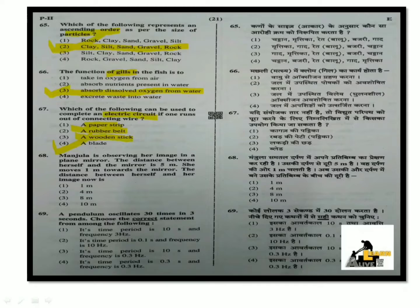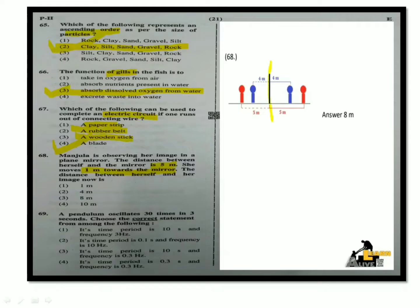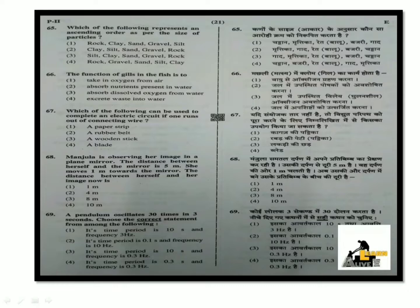Next question: Manjula is observing her image in a plane mirror. The distance between herself and the mirror is 5 meters. She moves 1 meter towards the mirror. The distance between herself and her image now is? Using the plane mirror diagram: when she moves 1 meter closer, she is now 4 meters from the mirror, so her image is 4 meters behind the mirror, making the total distance between herself and her image 8 meters. The answer is 8 meters.